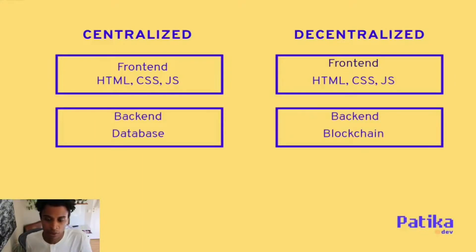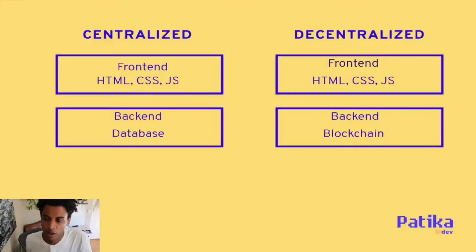On the back end, instead of working with a database that's hosted or centralized somewhere, we can use the blockchain as our back end. We can store data on a blockchain, read data, and find things like transactions or user authentication — basically the user's wallet address — all on-chain. We even have things like oracles, where we can get information and data from outside sent to the blockchain and into our applications.